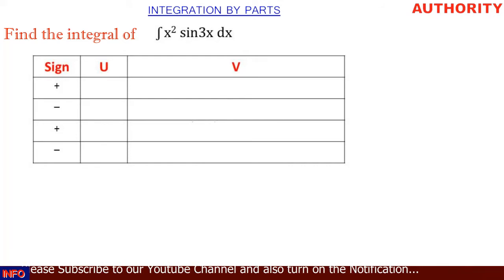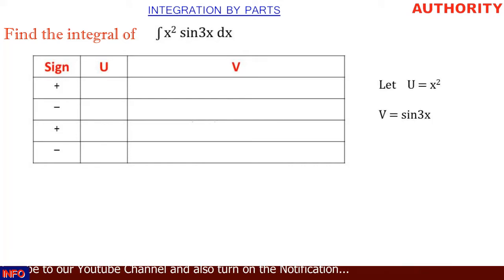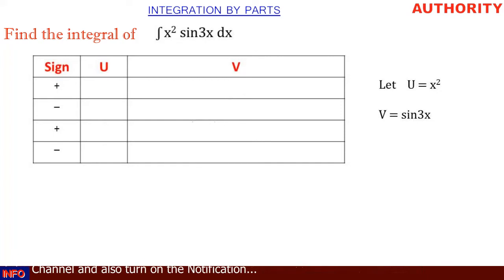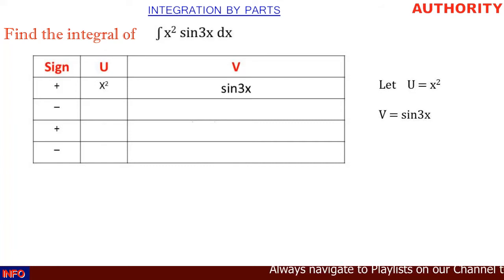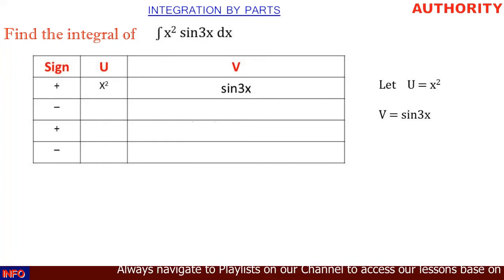Going back to the question — the integral of x squared sine 3x — we let u equal x squared, and we let v equal sine 3x. So in the table, x squared goes under u and sine 3x goes under v.